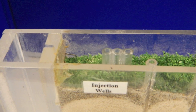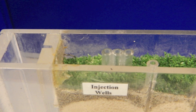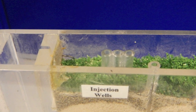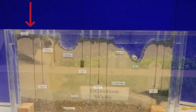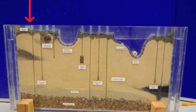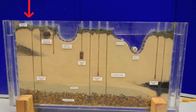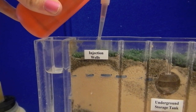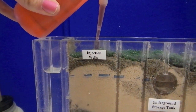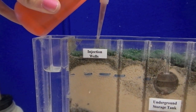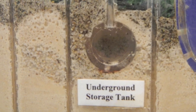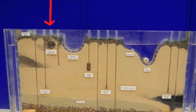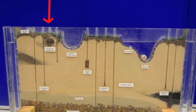There are a series of injection, observation, and pumping wells across the front of the model. To the far left are three injection wells immersed within the sediments. Using the squeeze bottles, dye can be injected into these wells, with the contaminant showing up subsurface at three locations. The other injection well is located at the leaky underground storage tank on the left side of the model.